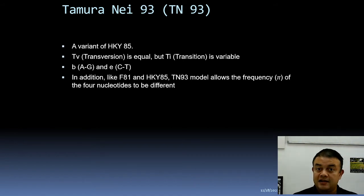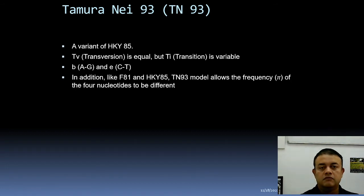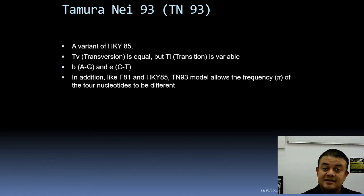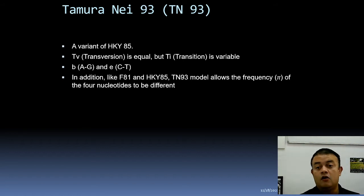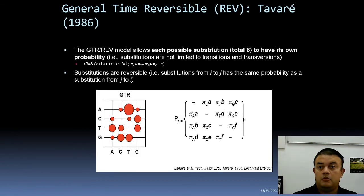The Tamura-Nei 1993 model, TN93, is similar to HKY85. The difference is that the two types of transitions — A/G transitions (alpha_AG) and C/T transitions (alpha_CT) — can have different rates from each other, adding two extra parameters. Like HKY85, TN93 allows the frequency pi of the four nucleotides to be different.